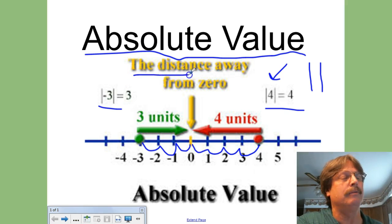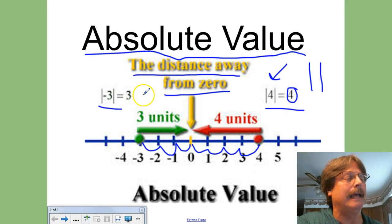So absolute value means the distance away from 0, and the unique thing about it is it always shows up looking like a positive number, not that it is a positive number, but just how many units away. Hope that helps you out.